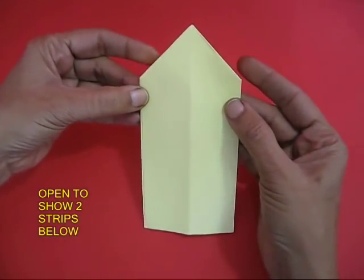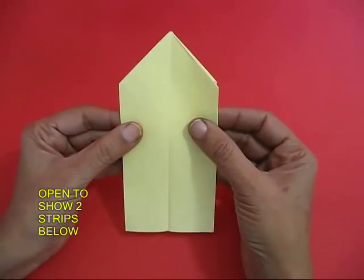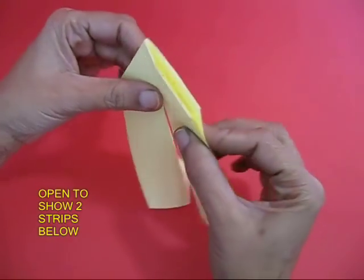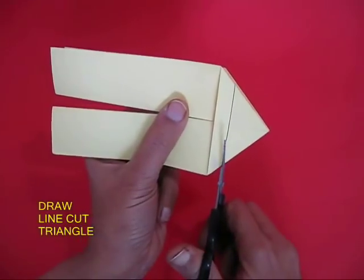Now you will see an arrow kind of shape. Fold this so that you can see two independent strips below and a triangle on the top.